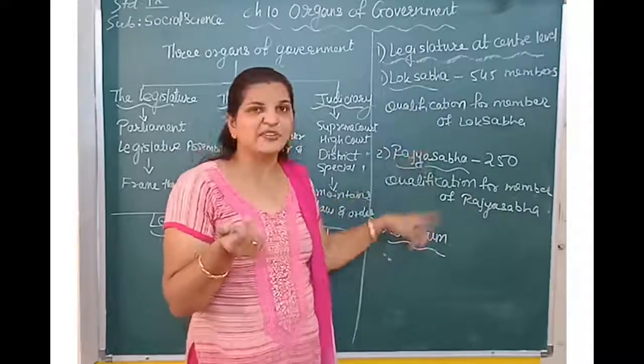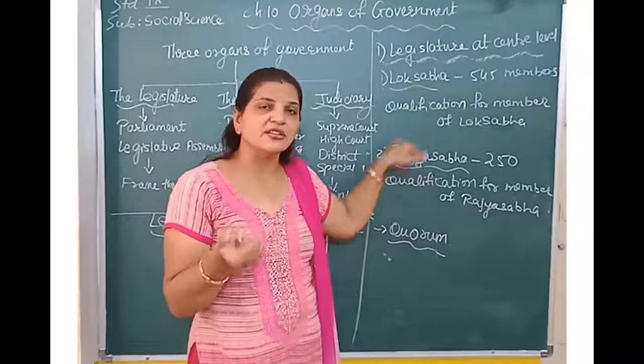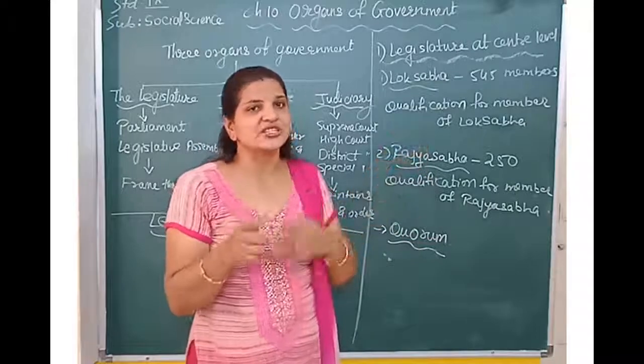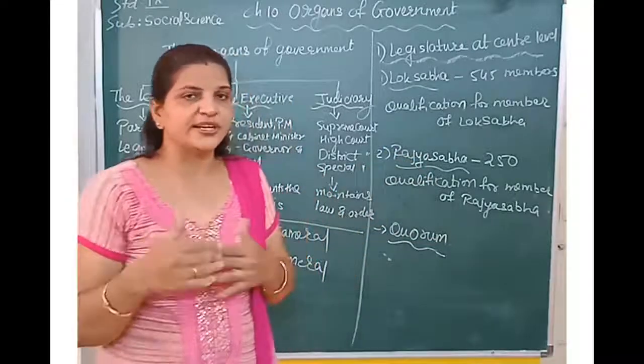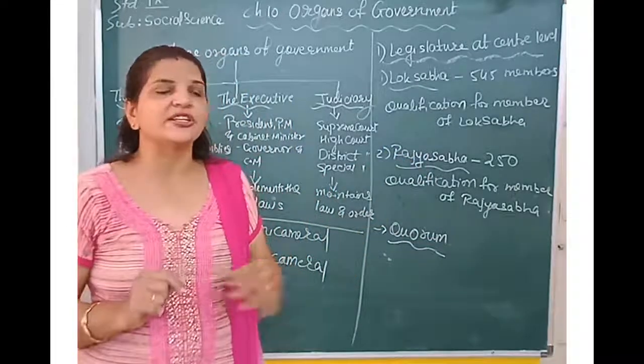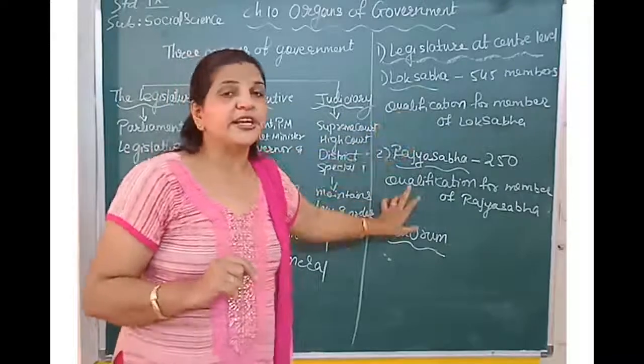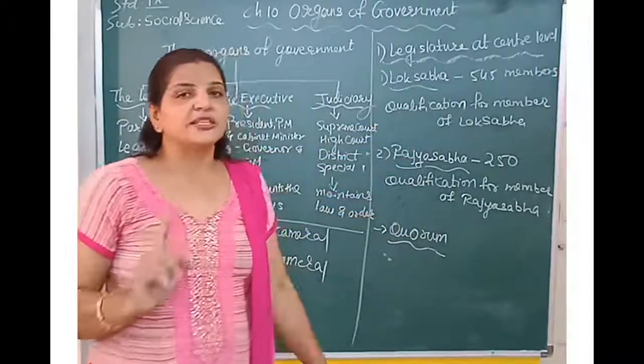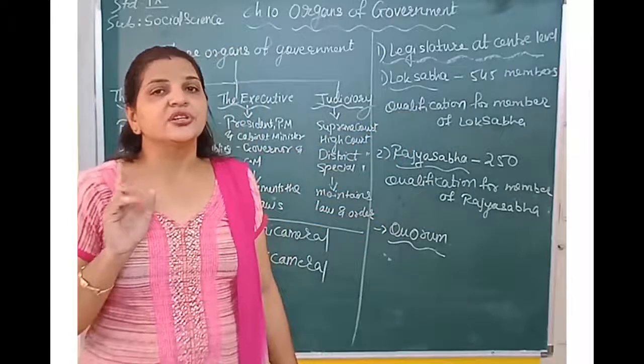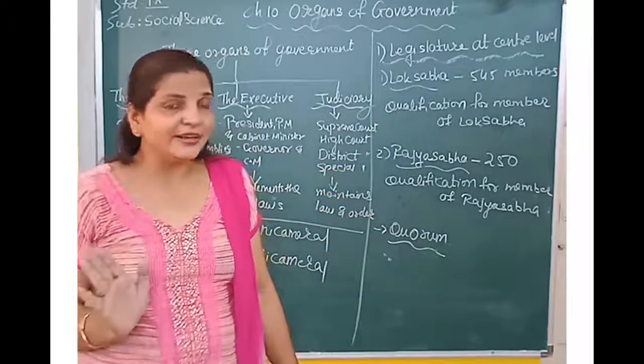The only difference between Lok Sabha and Rajya Sabha qualifications is the age: for Lok Sabha it is 25 years, while for Rajya Sabha it is 30 years. The other qualifications are the same for both houses.